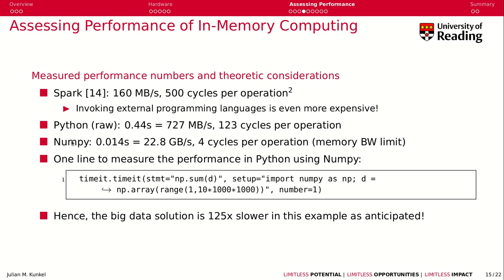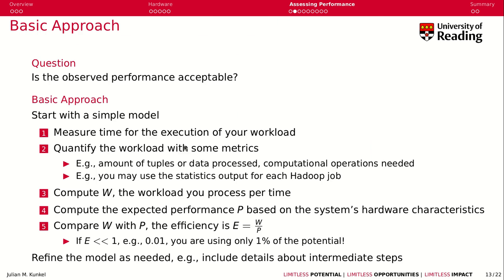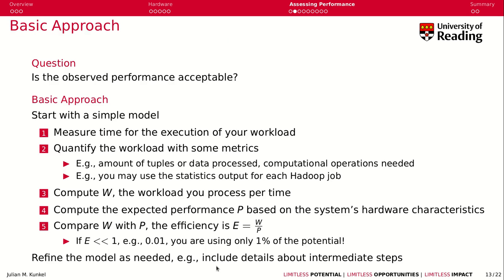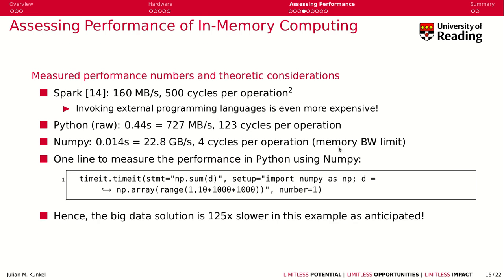When you use NumPy, which is an optimized library for math, we get 0.014 seconds, which corresponds to 4 cycles per operation. You can then compare this with the memory bandwidth of the machine, and you see it achieves 22.8 gigabytes per second — pretty close to what we talked about in hardware. For example, a specific DDR4 DIMM can achieve something like 25 gigabytes per second. So this really is the memory bandwidth limit provided by the chip.